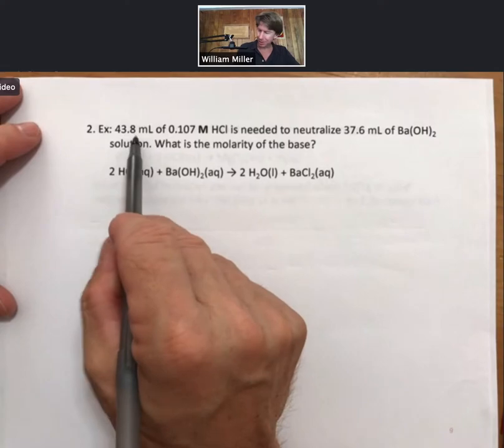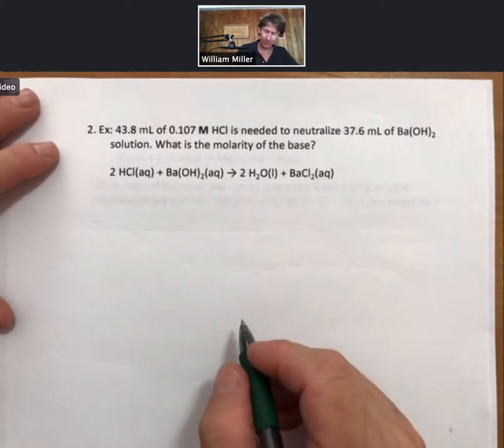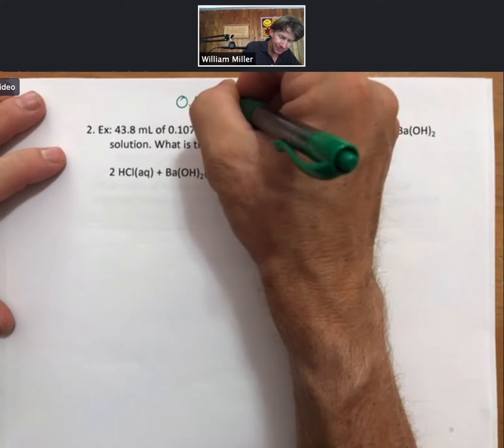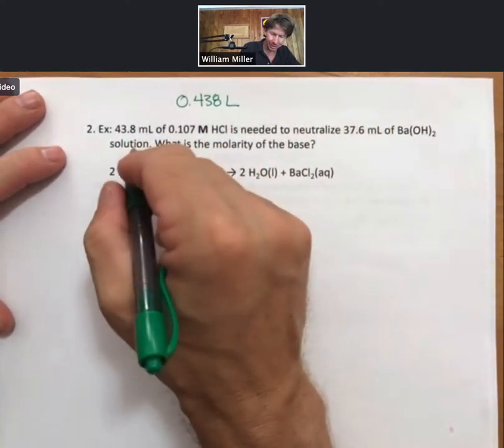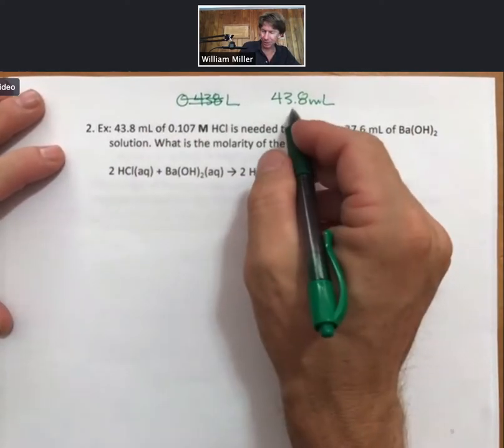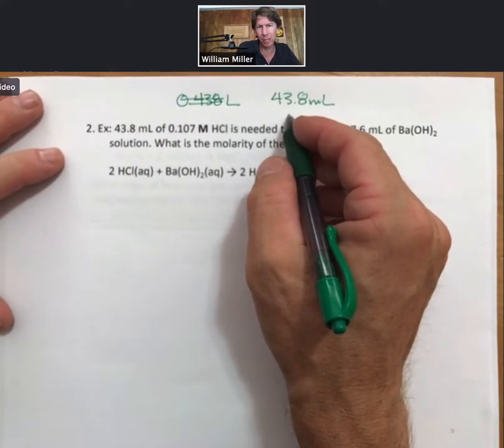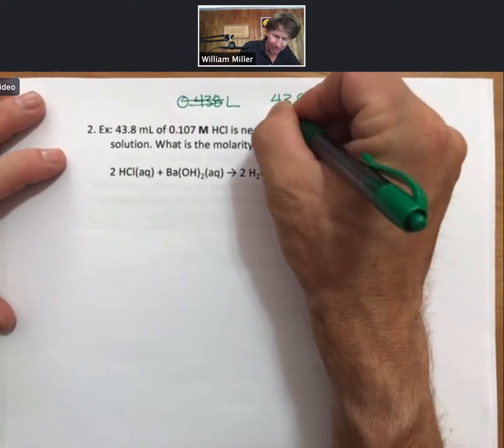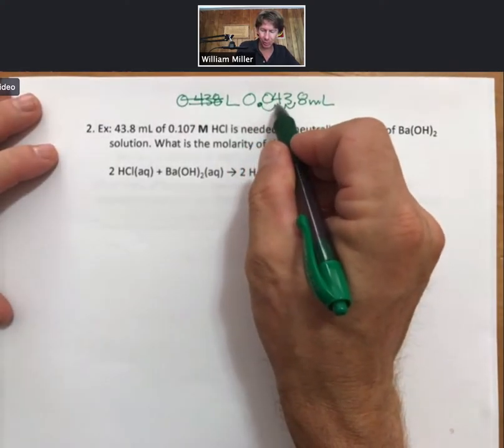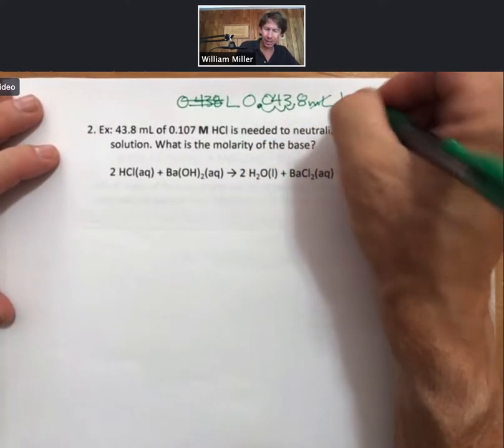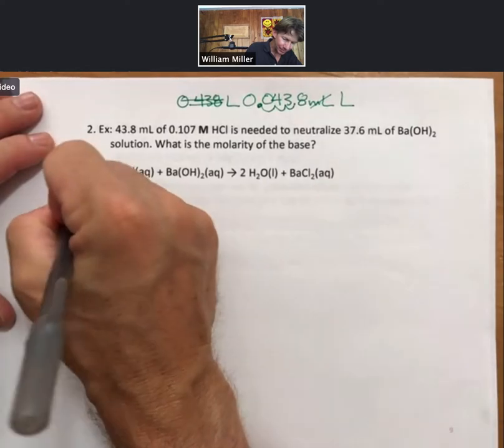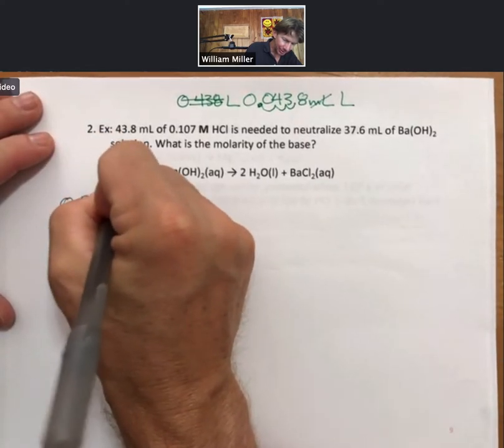I still have my volume, this time in milliliters instead of liters. So I'm going to go ahead and convert it. I know my milliliters. I know that to get to liters, there's 1 liter equals 1,000 milliliters. That's 10 to the 3, so I'm going to move my decimal point three places. That's better. 0.0438 liters.